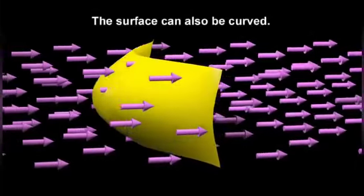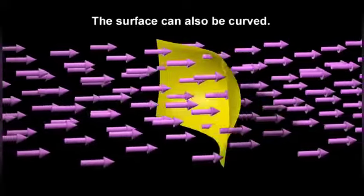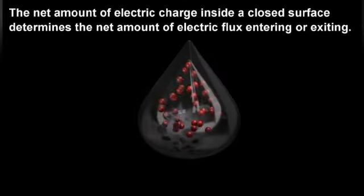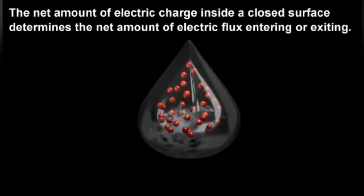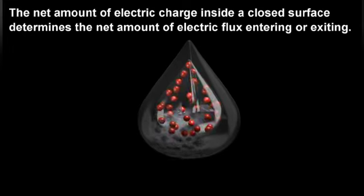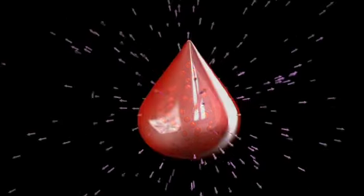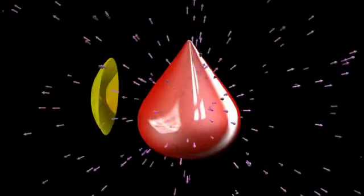The surface can also be curved. The net amount of electric charge inside a closed surface determines the net amount of electric flux entering or exiting. This remains true regardless of the size or shape of the closed surface.